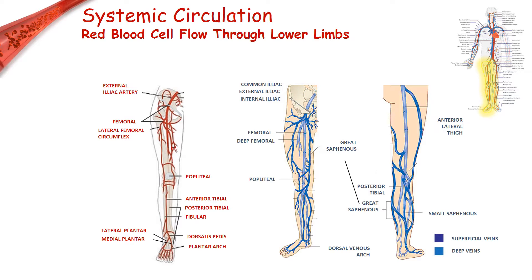The red blood cell will then follow the ipsilateral common iliac vein and eventually return to the heart through the inferior vena cava. Another systemic circuit has been completed.